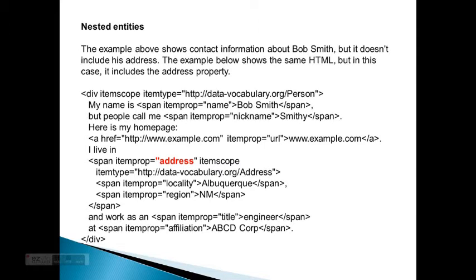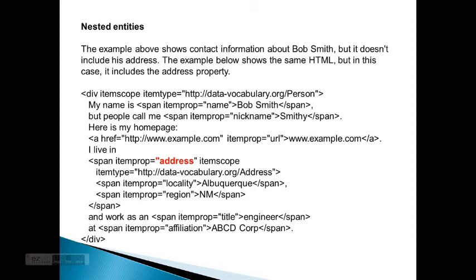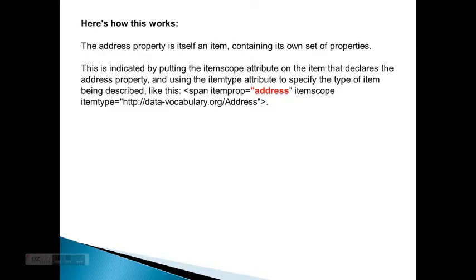Next, nested items. The example above shows contact information about Bob Smith, but it doesn't include his address. The example below shows the same HTML, but this time includes the address property. When you get to the middle, you'll see itemprop equals address, with itemtype set to data-vocabulary.org/Address. Then itemprop equals locality — Albuquerque — end span; span itemprop equals region — New Mexico — end span. The address property is itself an item containing its own set of properties, located by putting the itemscope attribute on the element that declares the address property, using itemtype to specify the type as data-vocabulary.org/Address.